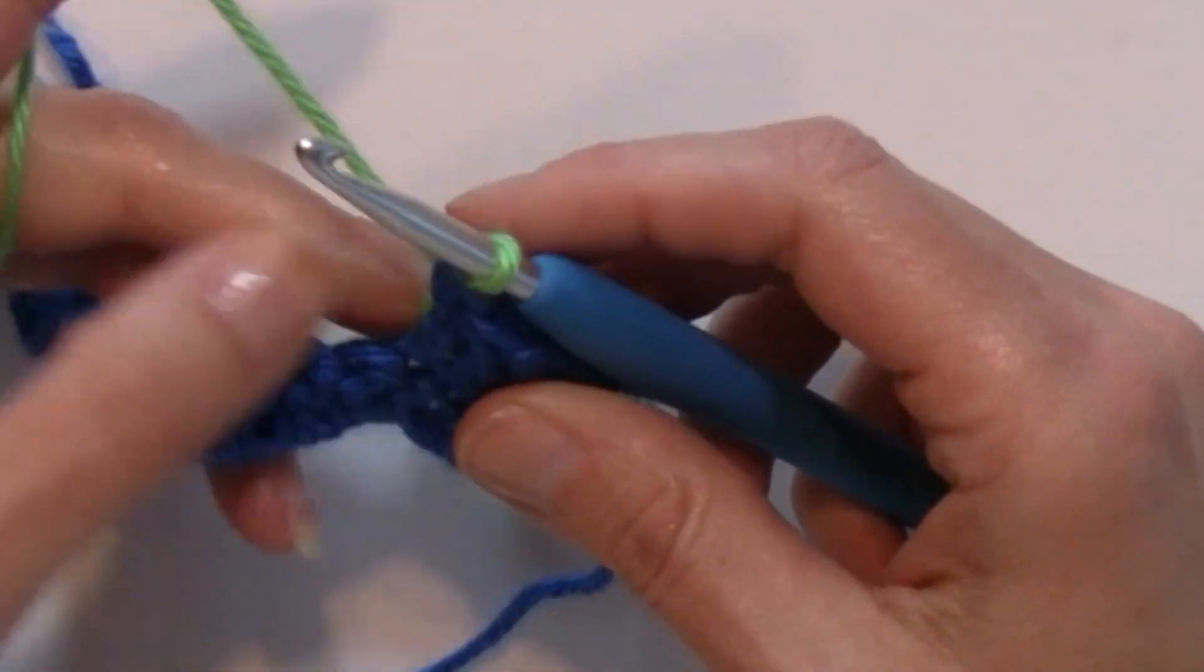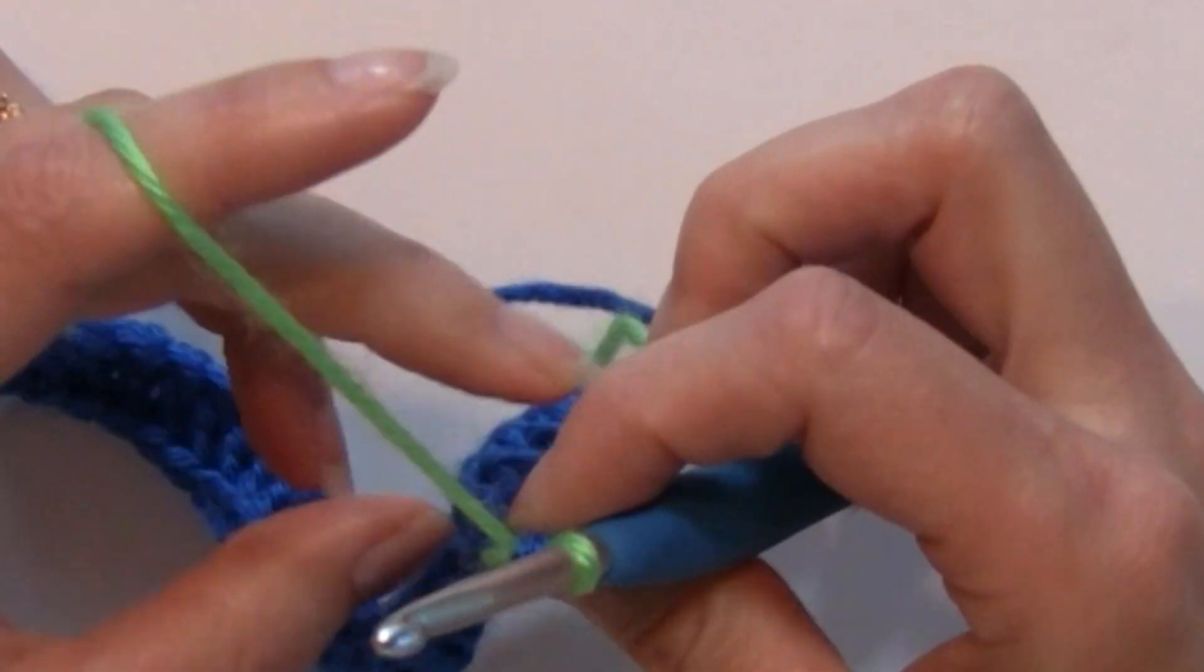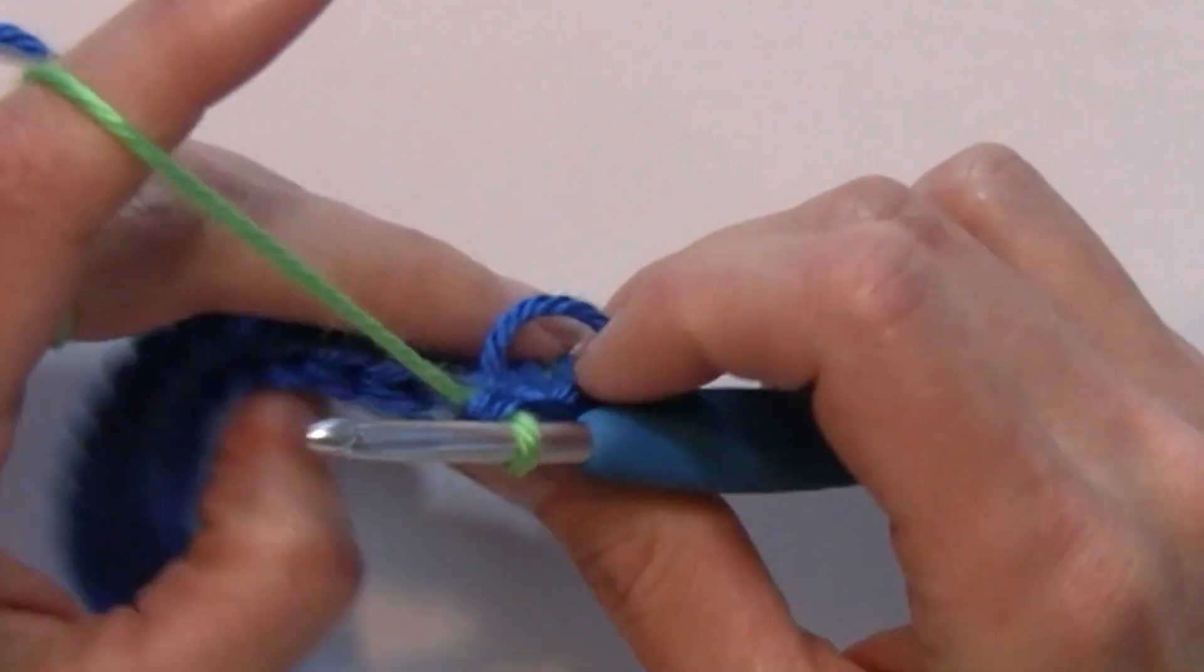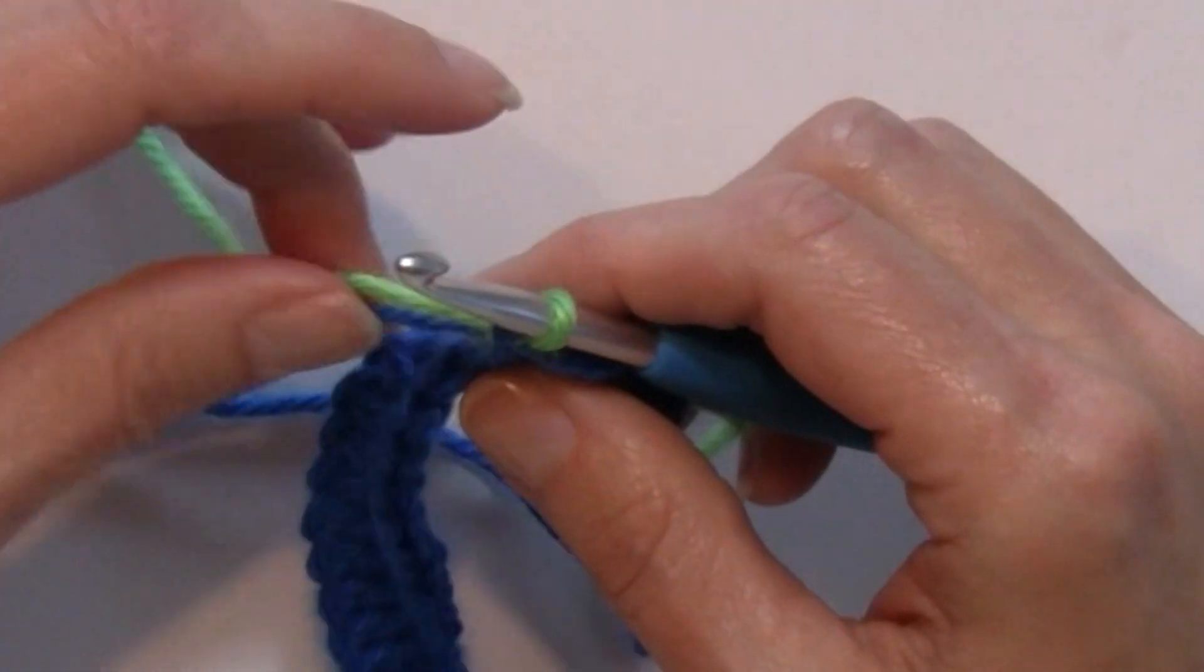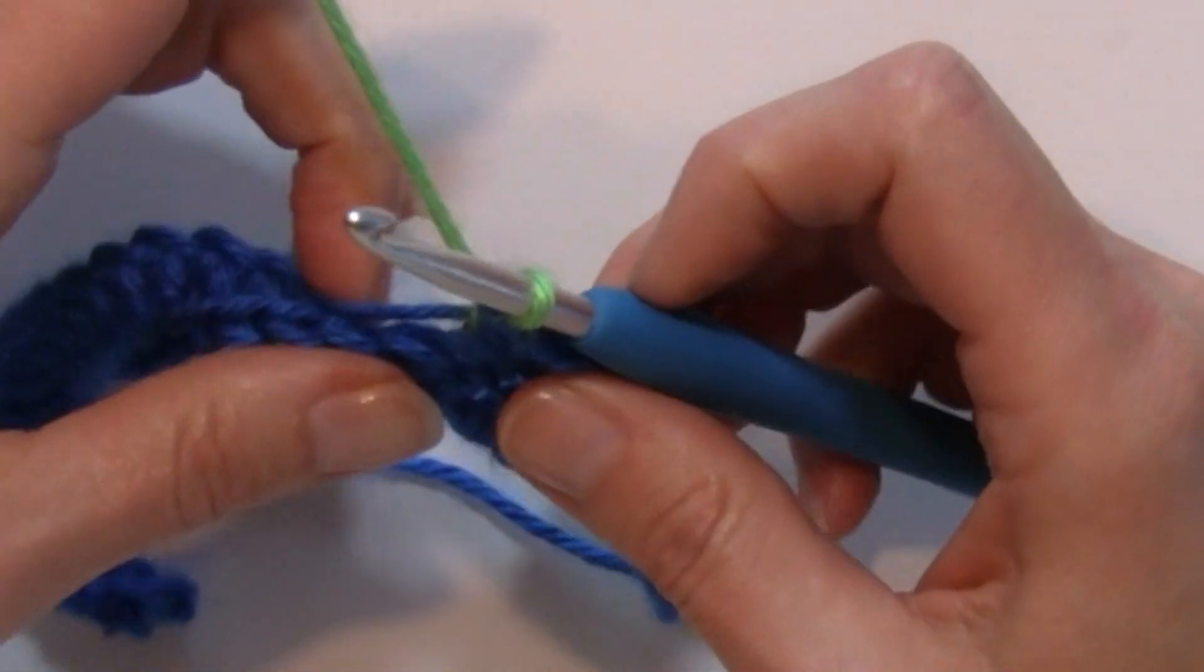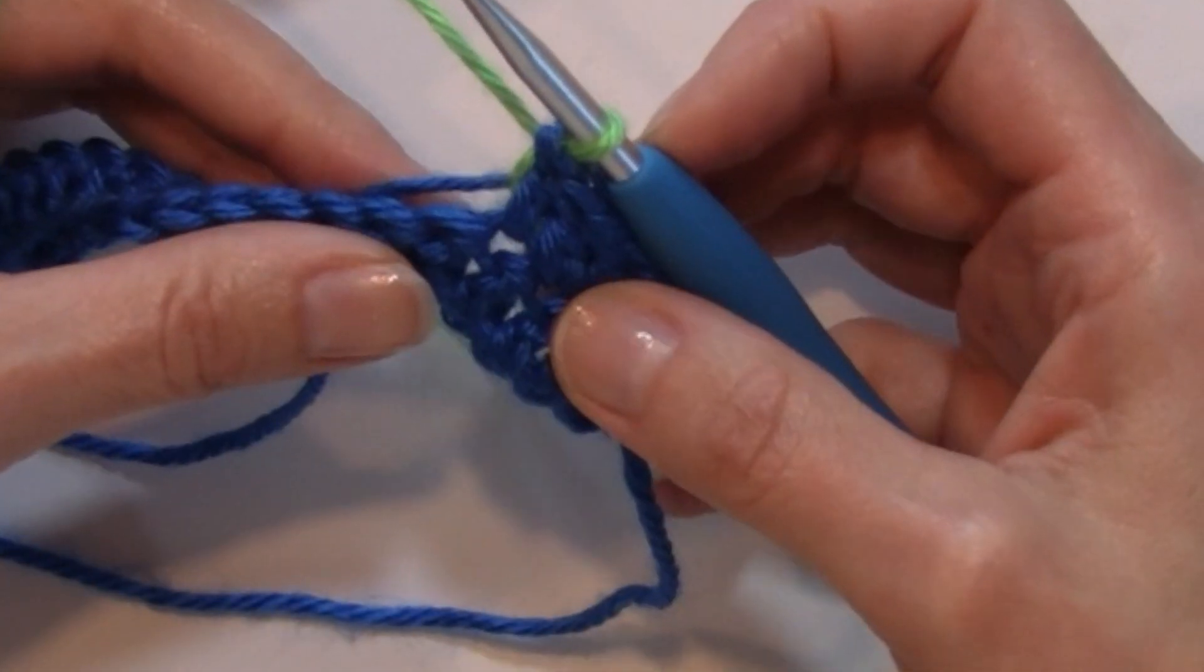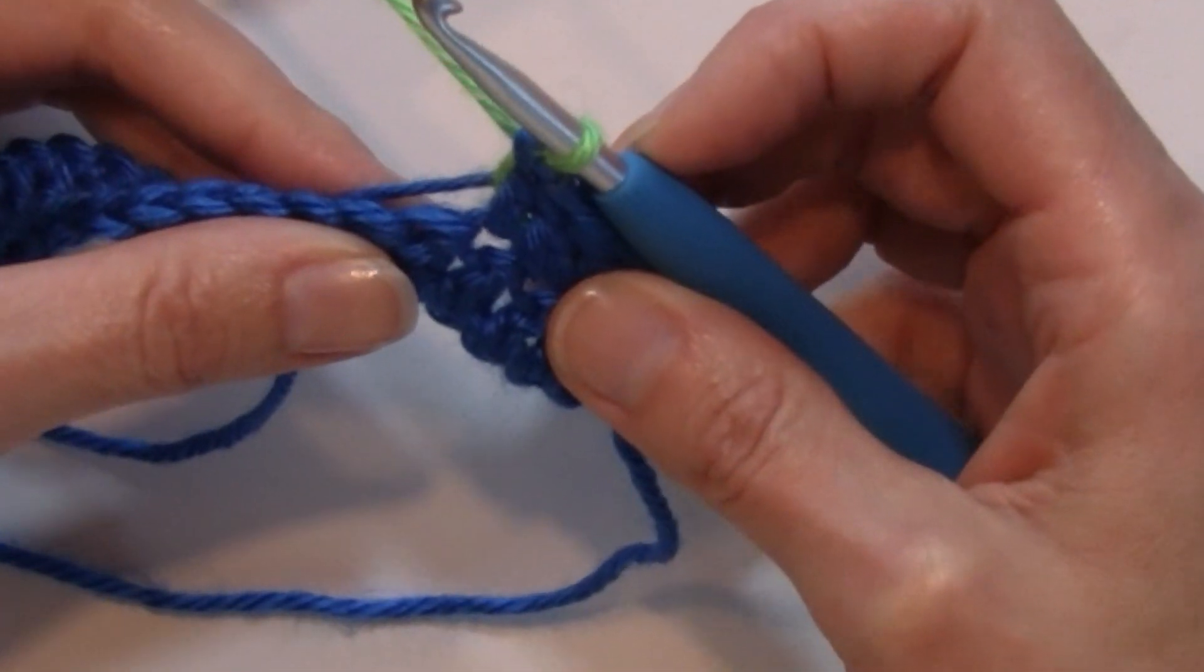I'll complete my last double crochet and now I want to work over and carry that color A so that I have it once I've completed that popcorn stitch, I want to be continuing on with that color.